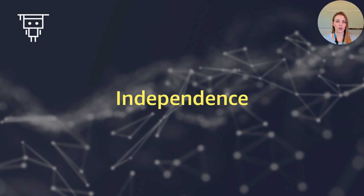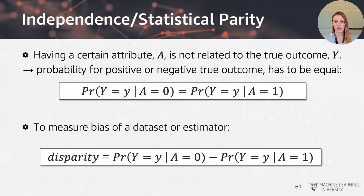This leads us directly to the first criteria: the independence criteria, also called statistical parity. Something is fair if there is no difference based on whether or not you have a given attribute. In probability notation, having a certain attribute A is not related to the true outcome Y, meaning the probability for positive and negative true outcomes has to be equal. If it doesn't matter whether you belong to a certain group, the probability of having an outcome should be equal regardless of attribute A.